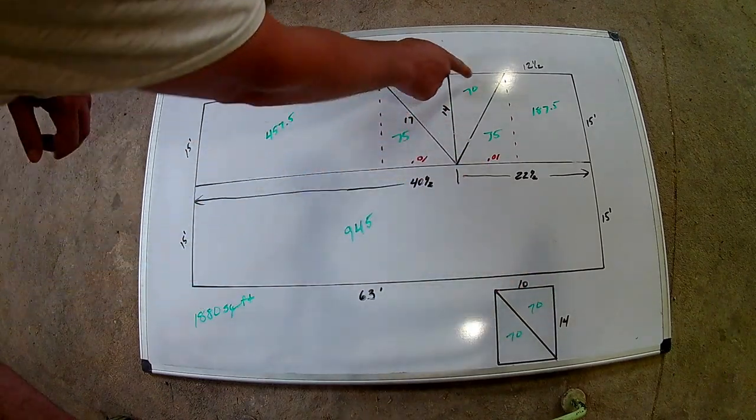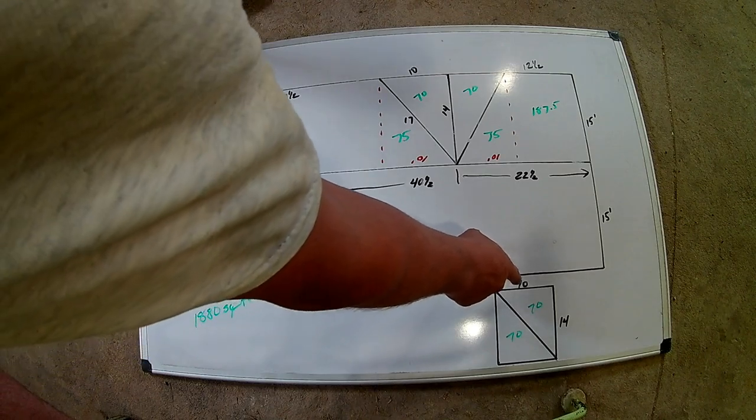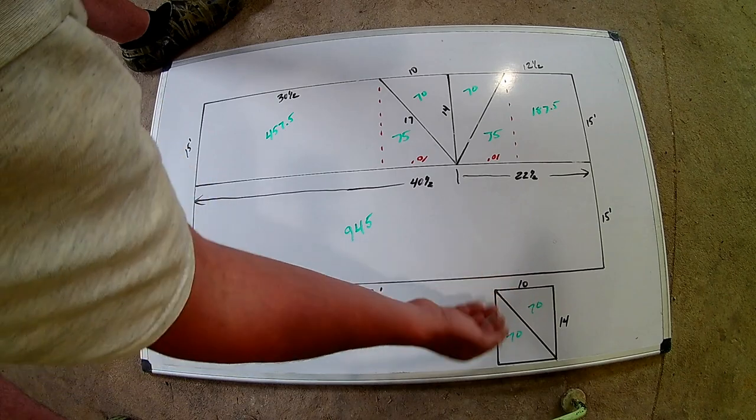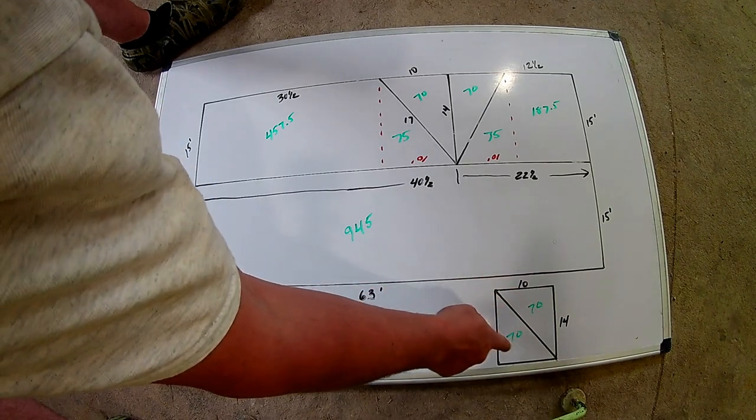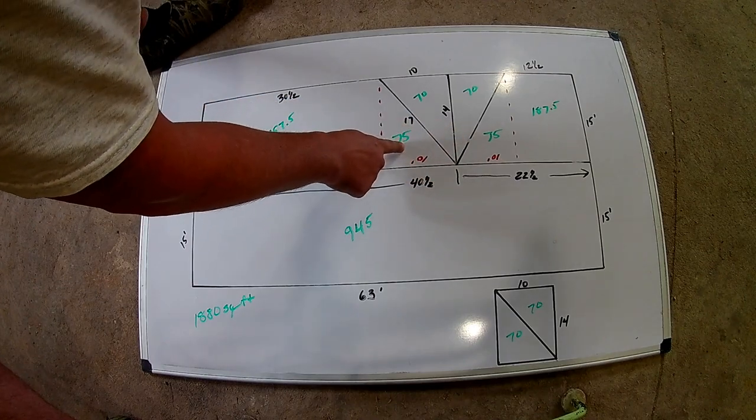This is 10 by 14, which is these other triangles. But basically, when you figure it out, you're going to have 10 by 14. And then these triangles will make a square or a rectangle. So you're going to divide that by 2. So this is 75. This is 75.